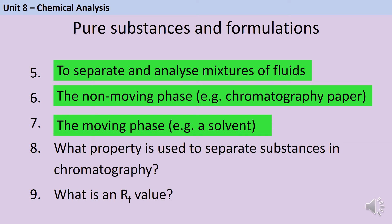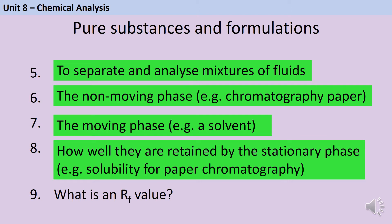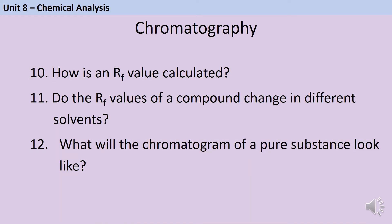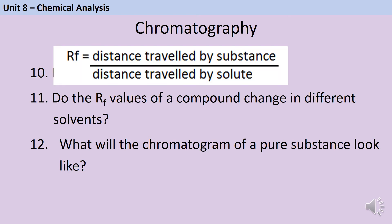Substances are separated according to whether they're more attracted to the stationary phase or the mobile phase. In paper chromatography, this comes down to how soluble they are in the particular solvent being used. An RF value stands for retention factor, and this is a numerical measure of how well retained that substance is. It always comes between zero and one. To calculate an RF value, you divide the distance travelled by the substance by the distance travelled by the solvent. The latter will always be a larger number, and therefore the RF value will always be between zero and one.